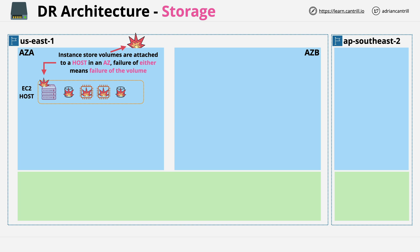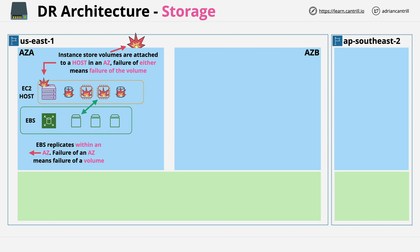As solutions architects we also have Elastic Block Store, or EBS — a storage product which supports EC2 by allowing you to create volumes that can be presented to EC2 instances. When you create a volume, it is created and runs within one availability zone. Data is replicated within that one availability zone across multiple underlying physical storage systems, but the failure of an availability zone will mean the failure of volumes running within it. There's no replication from one availability zone to another, so if an availability zone fails, all of the volumes within it will also fail. You can't create an EBS volume that runs across multiple availability zones or multiple regions — one EBS volume runs from one availability zone.